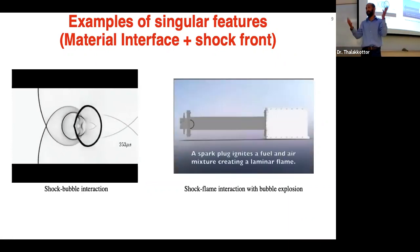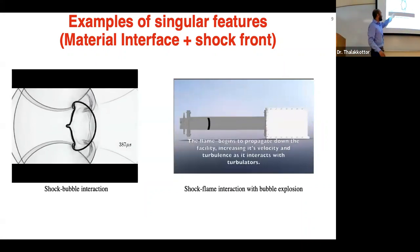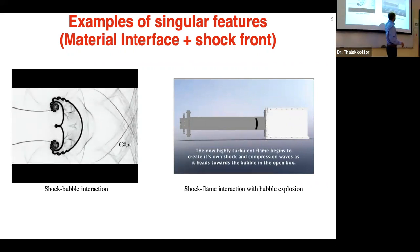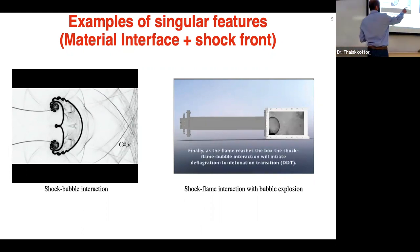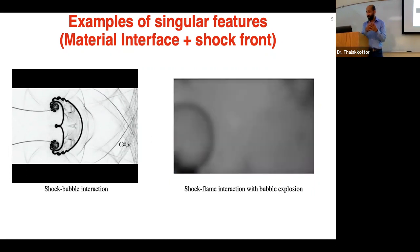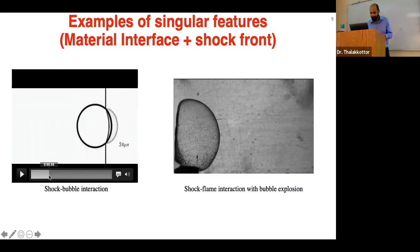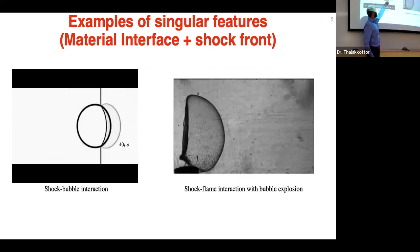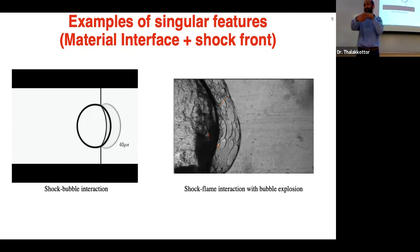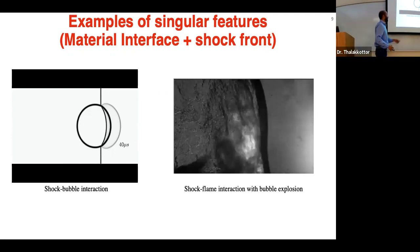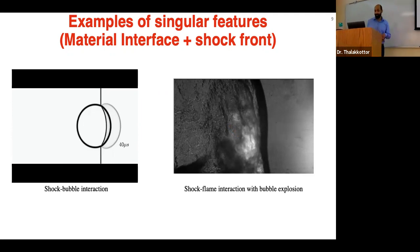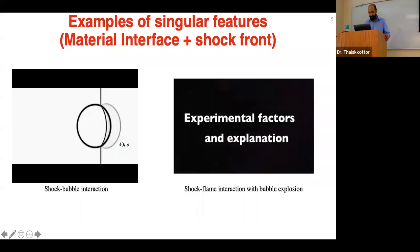So far we've talked about independent discontinuities — a shock, a material interface, or a flame. But what happens when these interact with each other? That generates other types of singularities. For example, a shock interacting with a bubble — a shock meets a material interface — can lead to a detonation. Where the two features interact, a new discontinuity is created: two surfaces meeting creates a line, and the features that develop originate from that line.